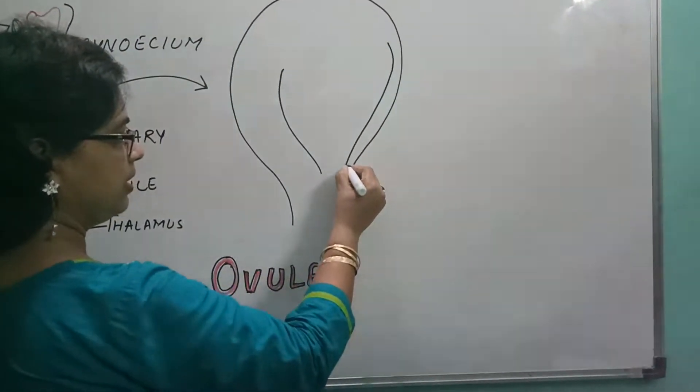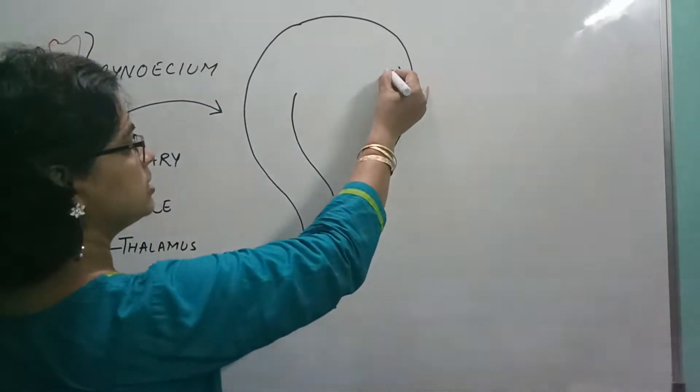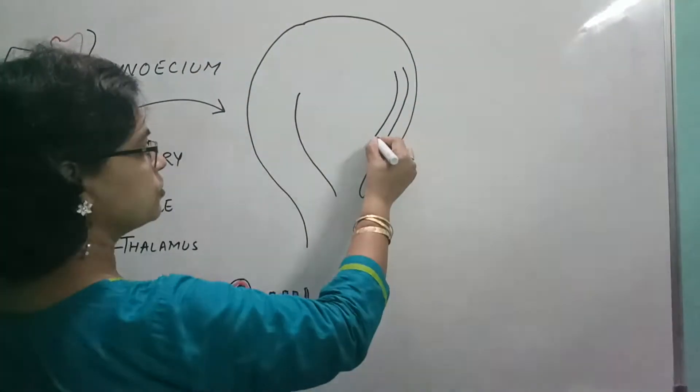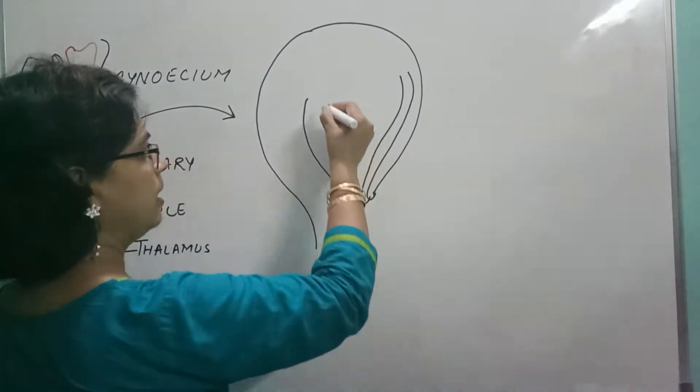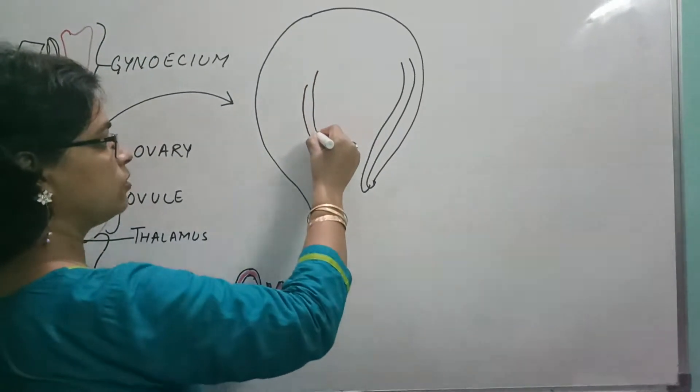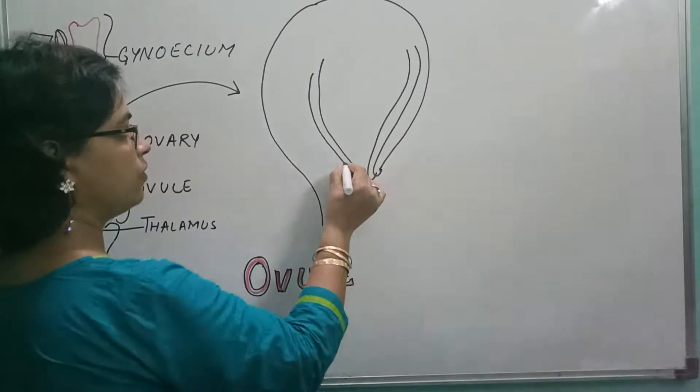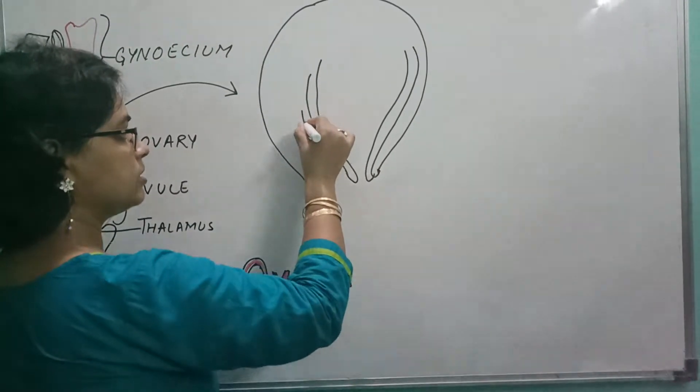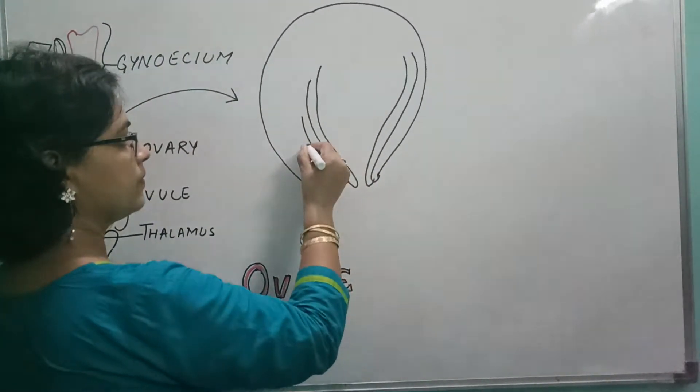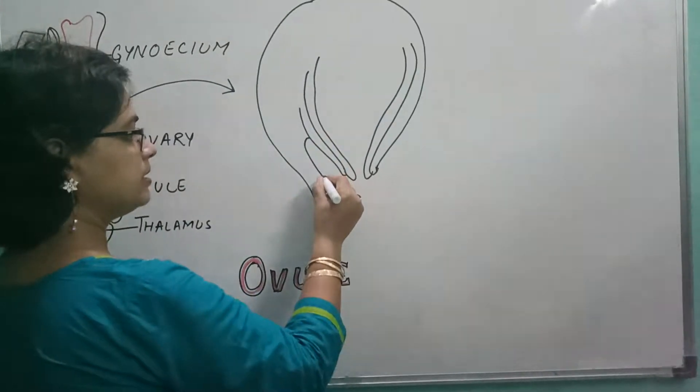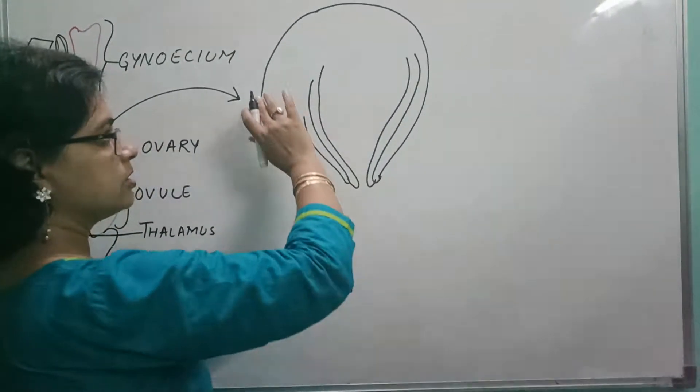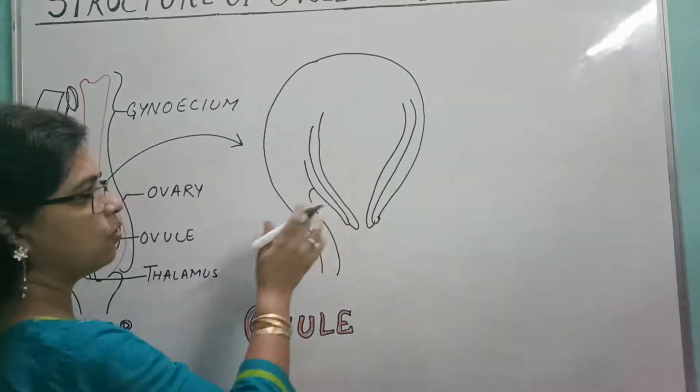One protective covering is present towards the outer side, and of course towards the inner side, another one. One more is there towards the inner side, and then followed by towards the outer side. A stalk is present. So this is the external portion of the ovule.